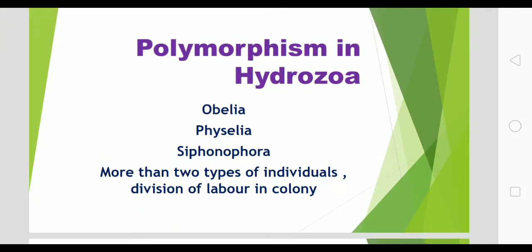In this video we are discussing about polymorphism. In this chapter, this is the last point. Polymorphism means many types. The examples of Hydrozoa we are going to study are Obelia, Physalia, Siphonophora, etc. Polymorphism includes more than two types of individuals, and all these types of individuals perform a function for the total colony. In another term, we can call this division of labor in a colony.